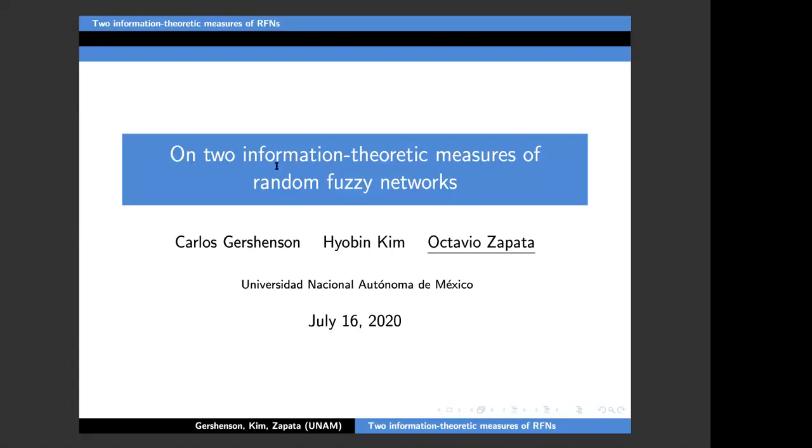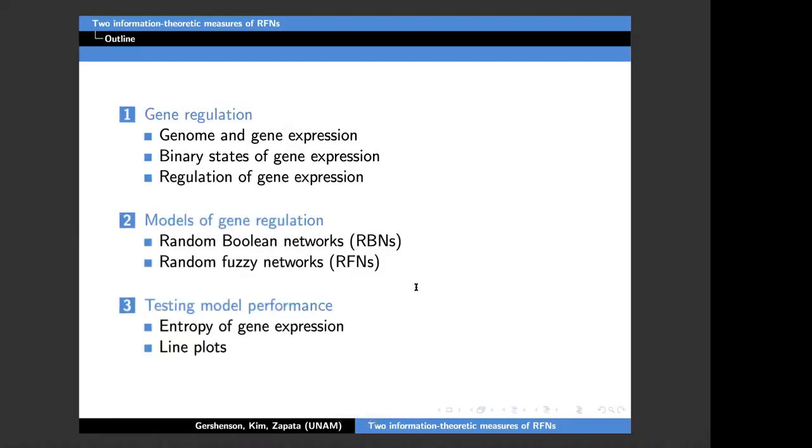I changed the title of the talk a little bit because of the suggestions of the referees. So we changed the scope of our paper. This talk is about the simulation of living systems, specifically about modeling genes interacting with themselves. It's a joint work with Carlos Gershenson and Joven Kim from Universidad Nacional Autónoma de Mexico. This is the outline of the talk. I will say a few words about gene regulation, then briefly review these two models of gene regulation, and explain how we test the model performance using entropy.